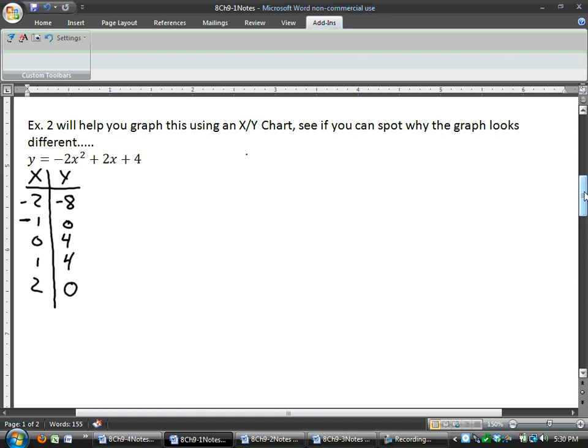So when I graph this, I have a point at negative 2, negative 8. 1, 2, 3, 4, 5, 6, 7, 8. And we have a point at negative 1, 0. At 0, 4. 1, 2, 3, 4. At 1, 4. At 2, 0. And just like last time, if we were to put in that 3, we would get negative 8. So we can see that middle again with the same above and the same below. And so we would have 3, negative 8.